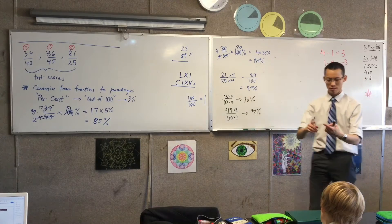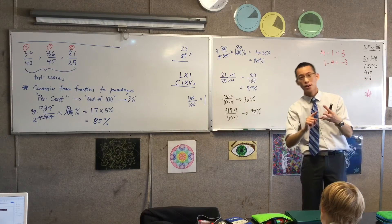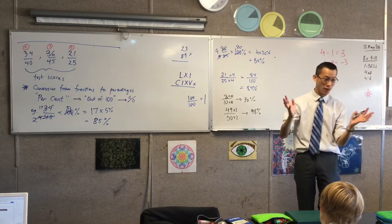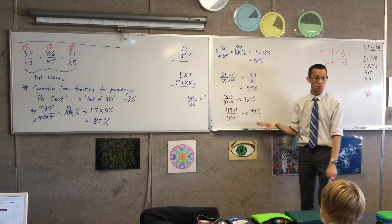They're all factors of 100. Super easy. I can just multiply by an easy number and get straight to my percentage. Okay? So any factor of 100, 2, 4, 5, 10, 20, 25, and on, on, on, on. You can just do this simple trick.